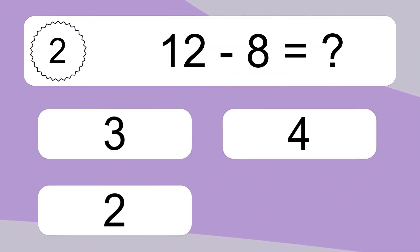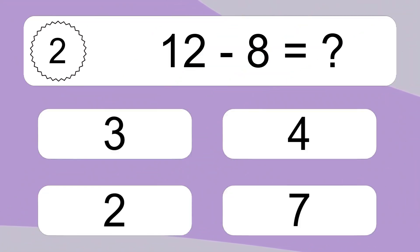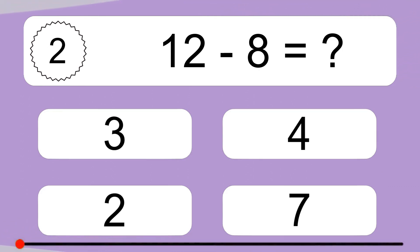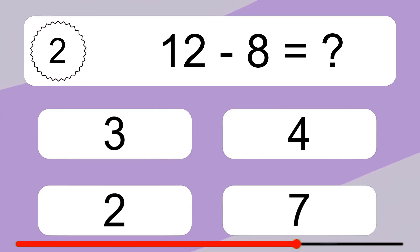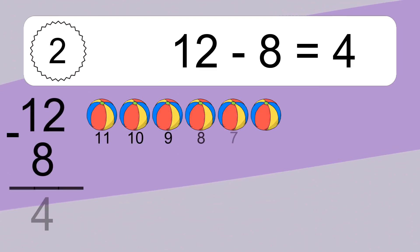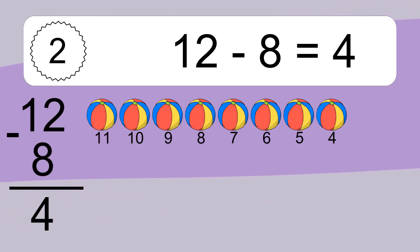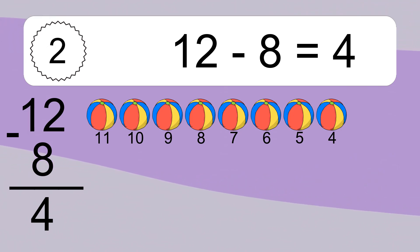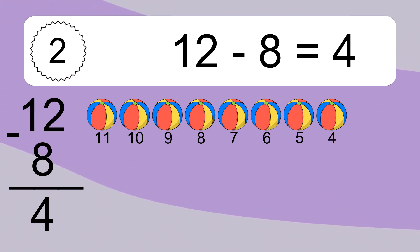12 minus 8 equals what? 12 minus 8 equals 4. Let's count it. 11, 10, 9, 8, 7, 6, 5, 4.